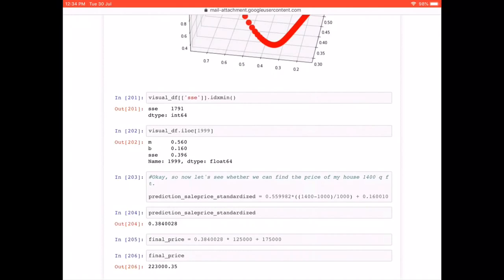So what we do is, whatever prediction sale price we got is standardized. Remember, we divided it by something as 300,000 minus 175,000, which was the max minus mean of the sale price. So we are going to multiply back with that difference, plus we are going to add the 175,000. So this will give us back the original price.